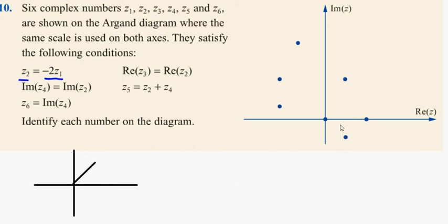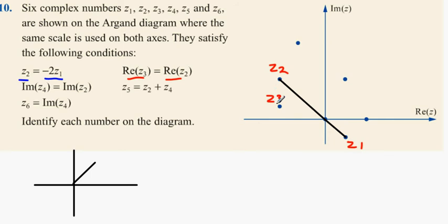So we're looking for something that's double in length and in the opposite quadrant. Looking at these points, we can see one is double in length. So this one here would be Z2, and this one is Z1. Now the real part of Z3 equals the real part of Z2, meaning they have the same X value. So Z3 has the same real value as Z2.